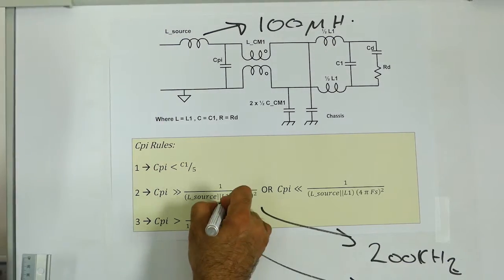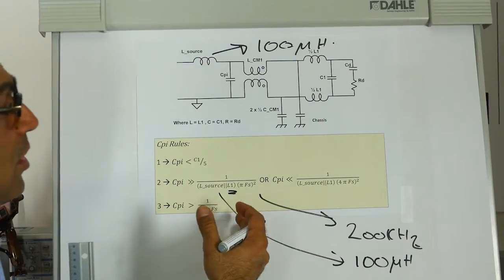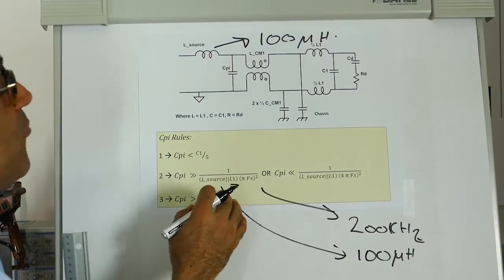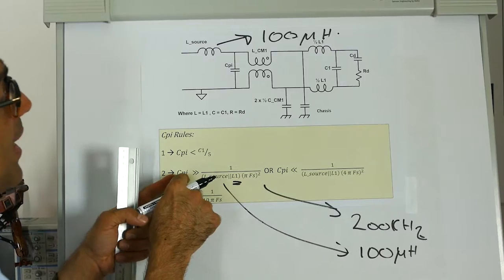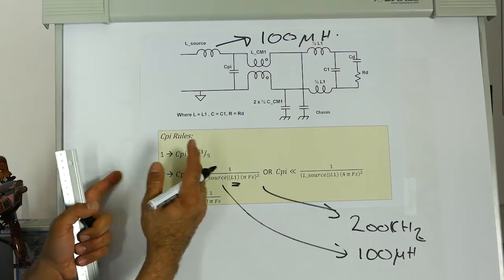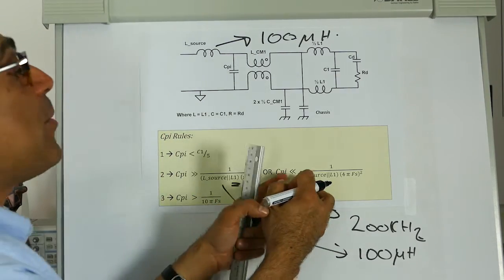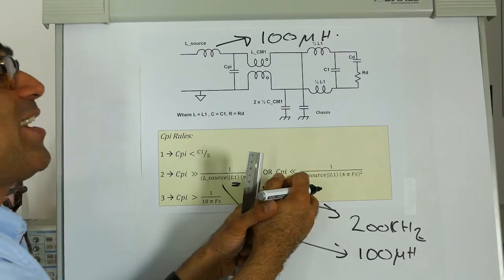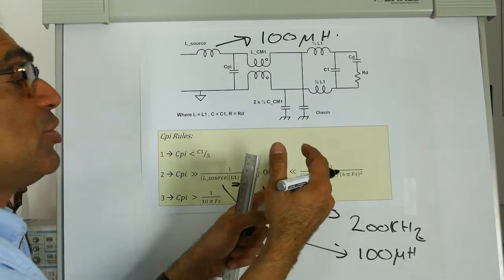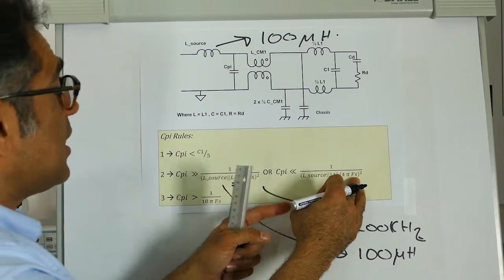I calculated L1 in one of the previous videos and therefore I can calculate what value of Cpi I can have, where it must be bigger than so that I don't cause a resonance at the switching frequency, or how much it should be smaller than so that, again, I do not cause resonance with the switching frequency.